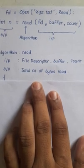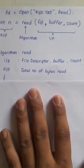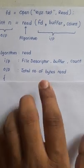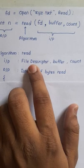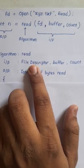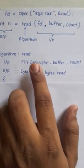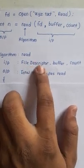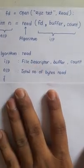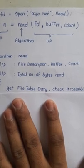We are reaching up to the file and then reading it byte by byte into our area. To reach the physical location of the file, we have the file descriptor. Using this file descriptor we can reach the file table entry and check whether the file is allowed for us to read or write. Since we are dealing with read here, we check the read operation. So the very first step in this algorithm is: get the file table entry and check accessibility.